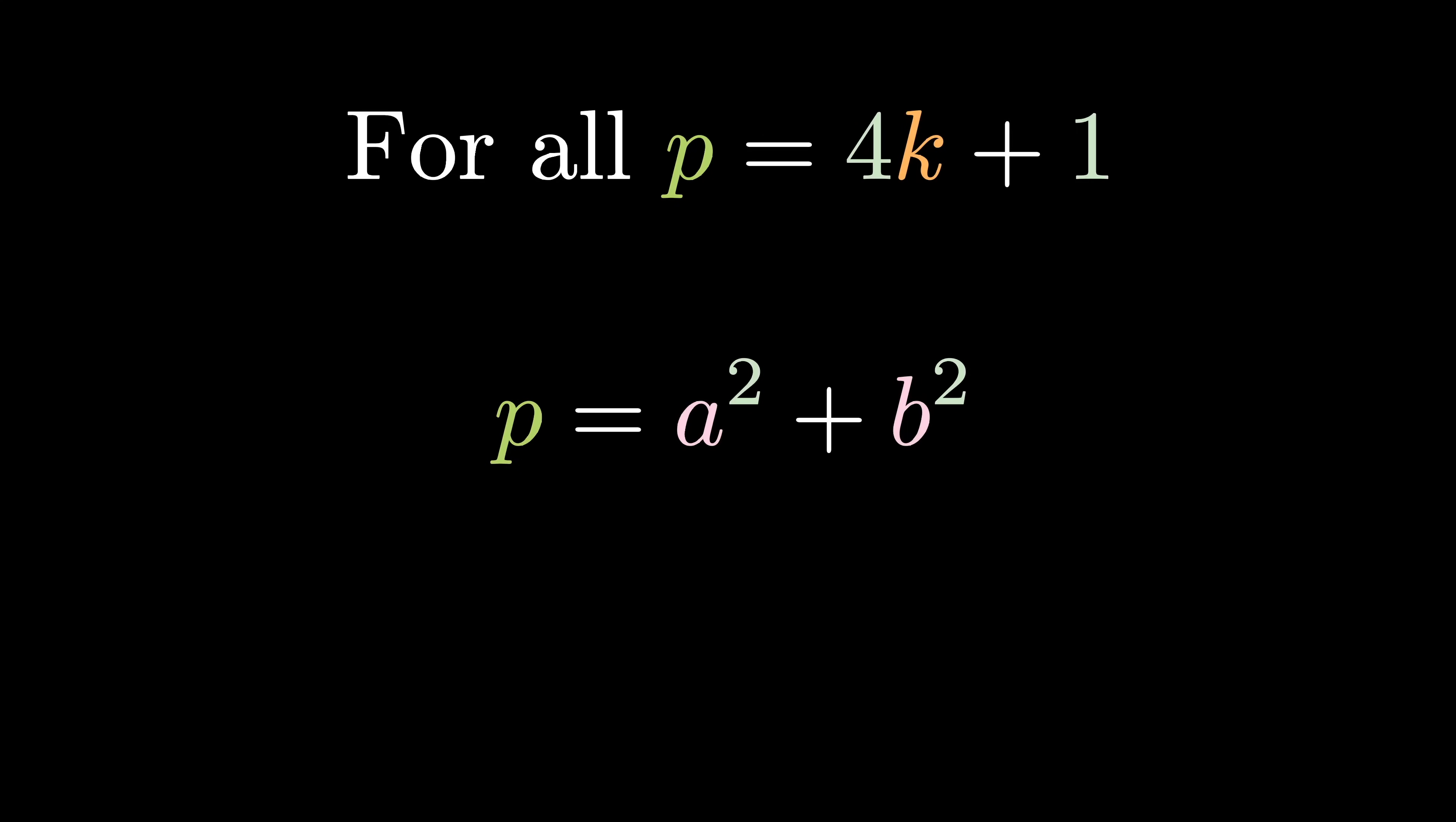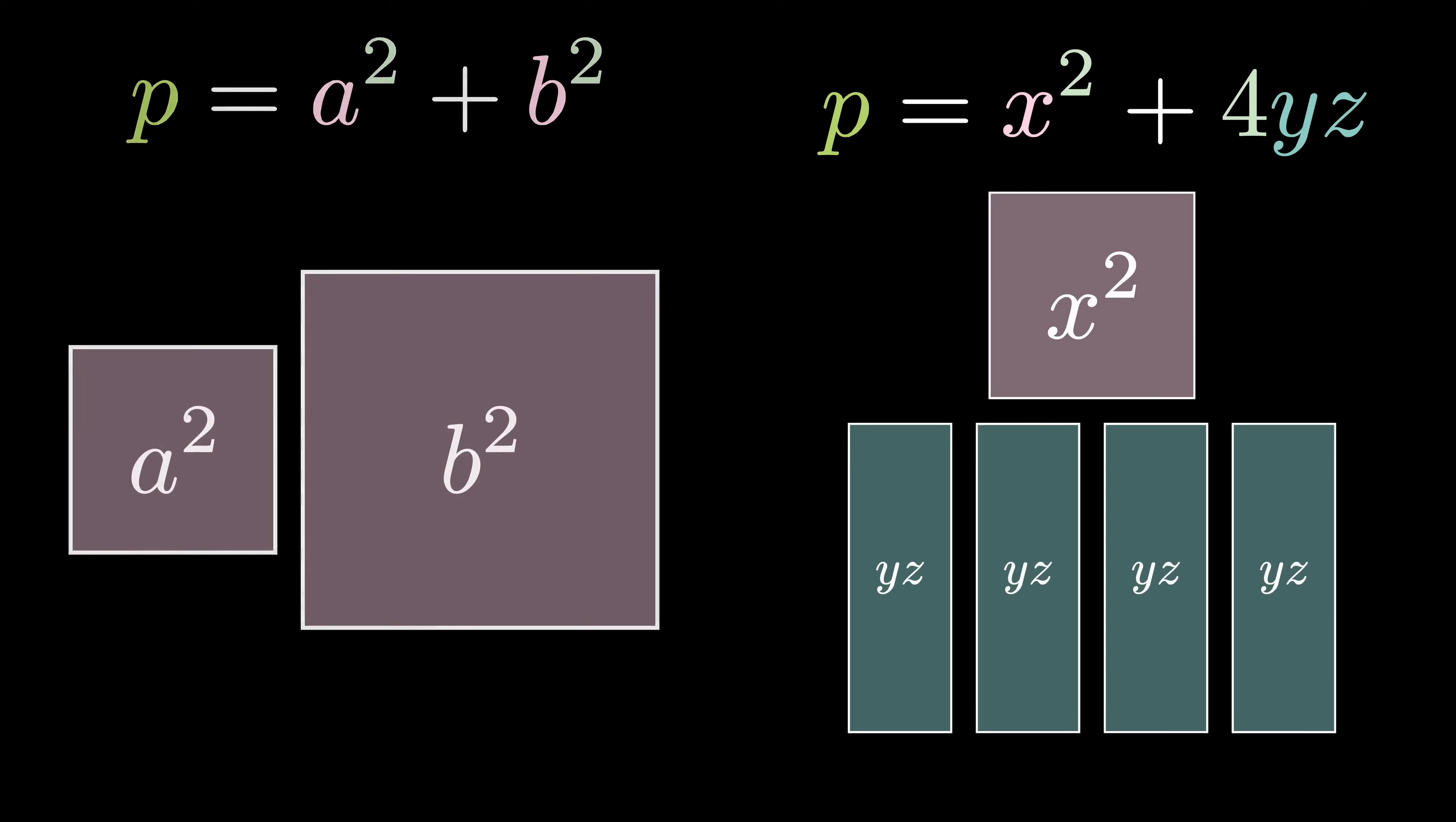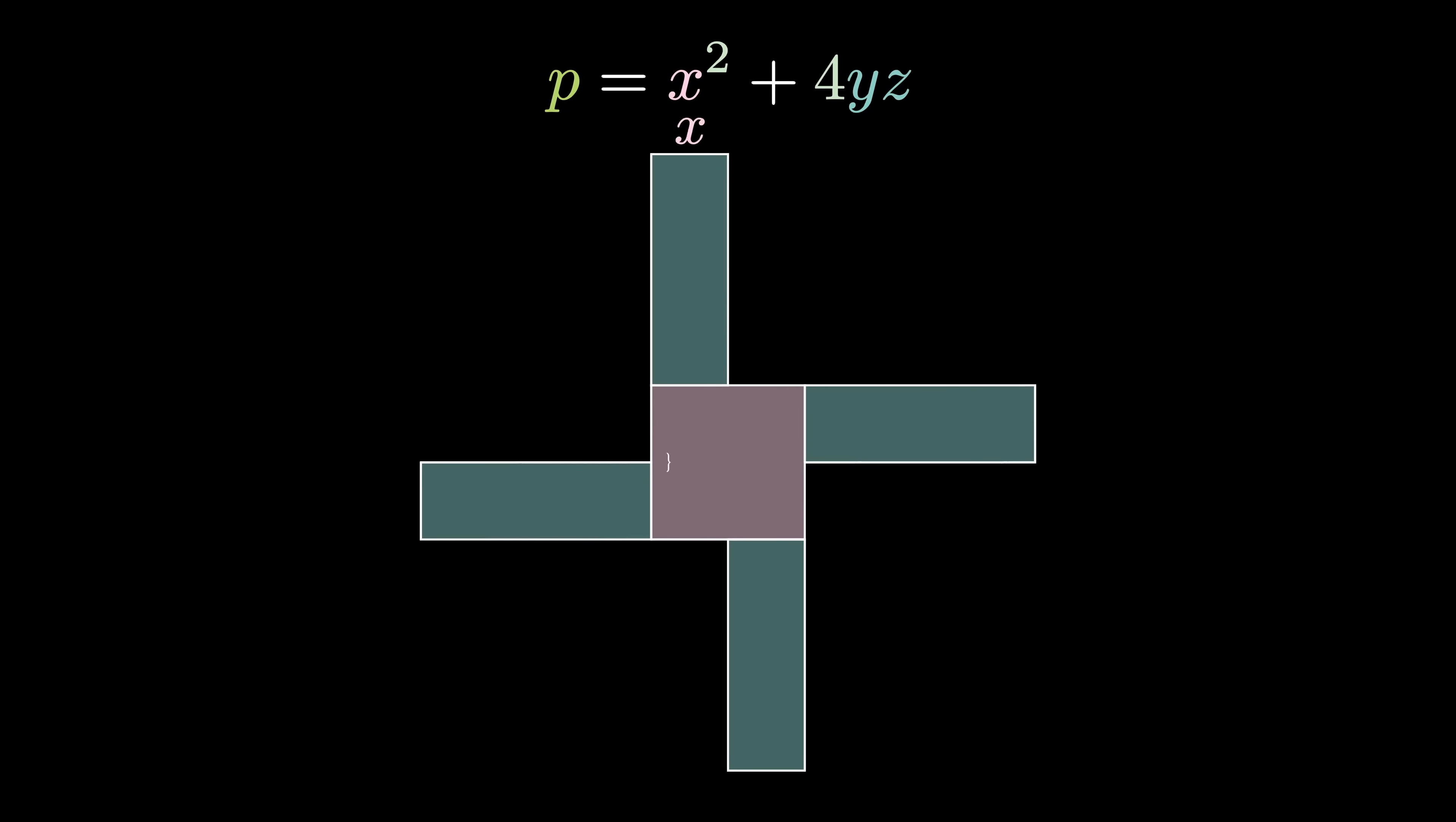Remember that what we're trying to prove is that any prime p of the form 4k+1 can be expressed as a sum of two squares. What this proof does is instead of breaking p down into two squares, it breaks it down into one square and four rectangles - this sort of windmill figure. Let's call the side length of the square x and the sides of each rectangle touching the square y and the other z.